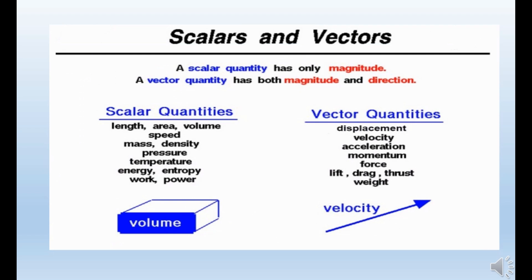Scalars and vectors. A scalar quantity has only magnitude, while a vector quantity has both magnitude and direction. Examples of scalar quantities include length, area, volume, speed, mass, density, pressure, temperature, energy, work, and power.